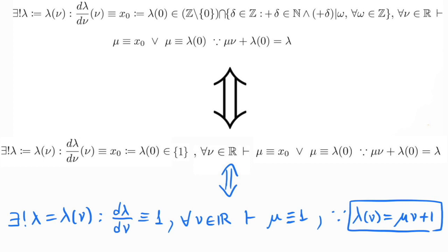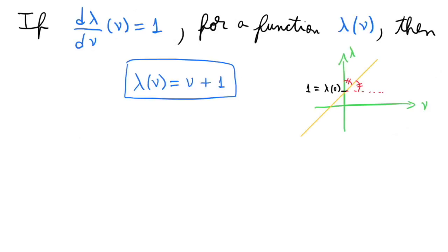If the derivative of lambda with respect to nu equals 1 for a function lambda of nu, then this function is nu plus 1. Its graph is drawn here. It is a straight line passing through the point 1 in the lambda axis with slope that makes an angle of 45 degrees with respect to both axes.